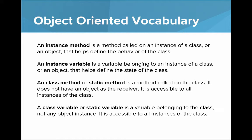There's some new vocabulary we've been using in the last few videos, so let's review that. An instance method is a method called on an instance of a class, or an object, that helps define the behavior of the class. An instance variable is a variable belonging to an instance of a class, or an object, that helps define the state of the class.